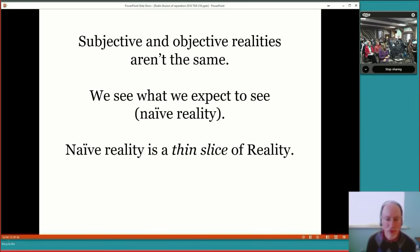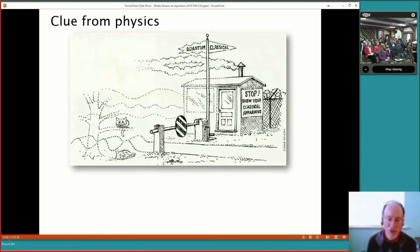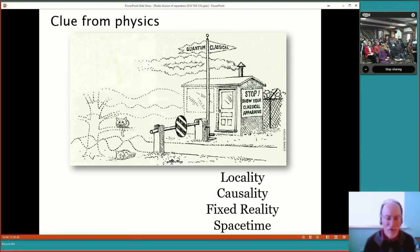Naive reality is a very thin slice of reality with a big R, which only raises the question, what is real reality? Well, we have a clue from physics about what real reality is. We're talking here about the deep structure of the physical world and maybe beyond. And it has to do with the transition between classical and the quantum domain. In the classical domain, we have ideas that have arisen that are called things like locality, causality, a fixed reality, and space-time. So, these are refinements of common sense.